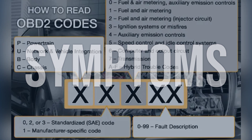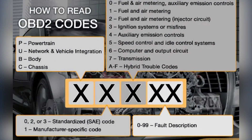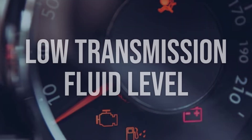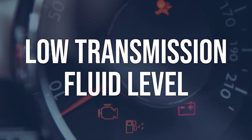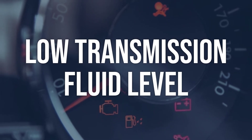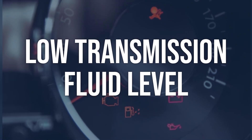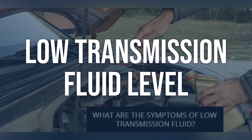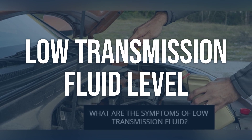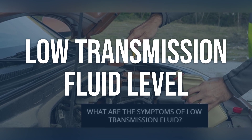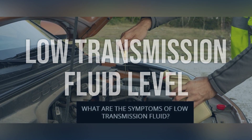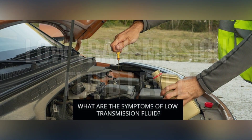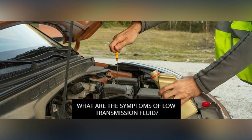Now we talk about possible causes, and how to diagnose and fix. Low Transmission Fluid Level: Check the transmission fluid level using the dipstick. If the level is low, it may indicate a leak or other issue. Look for any signs of transmission fluid leaks under the car. Top off the transmission fluid to the proper level. Inspect for any leaks and repair as necessary.